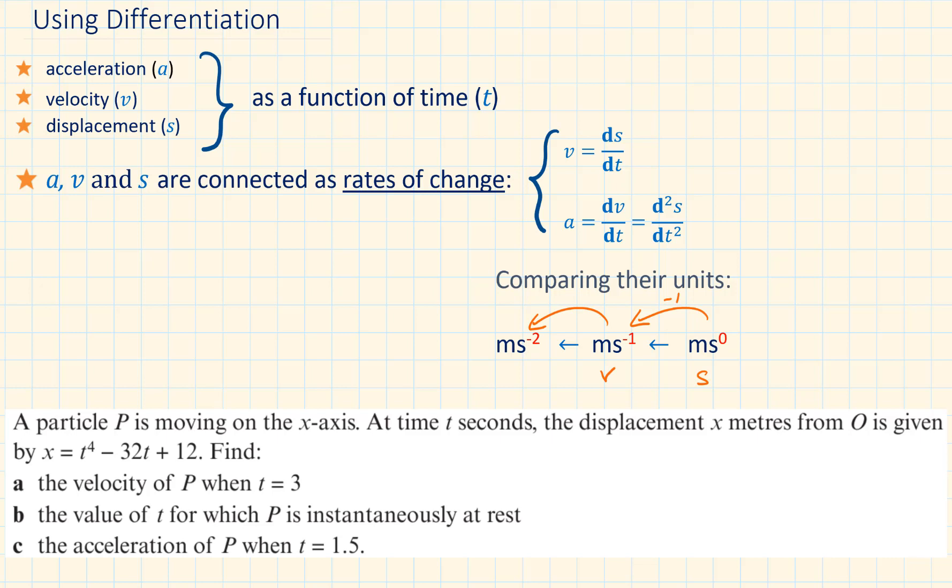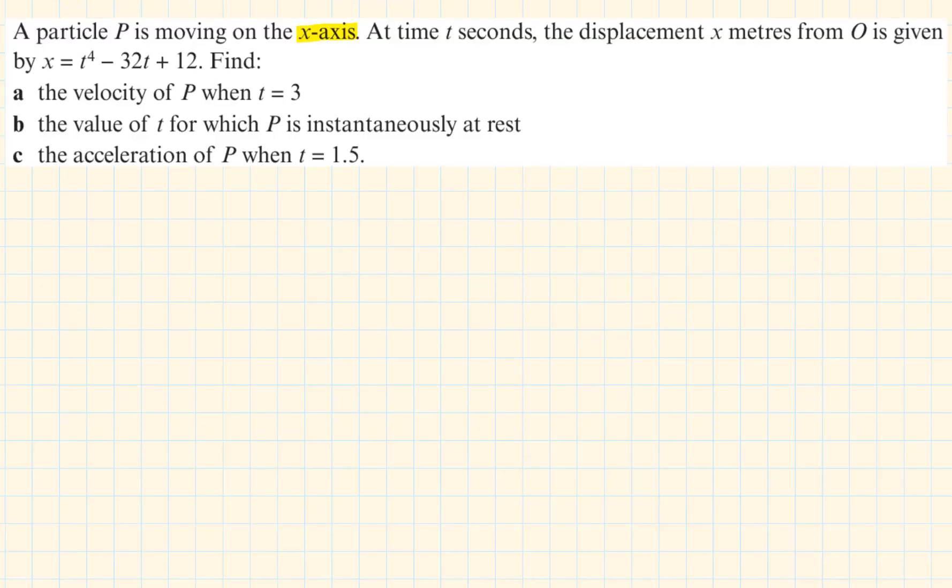Differentiating this, we subtract one from the power of s again, and this becomes meter per second squared, which is the unit of acceleration. A particle P is moving on the x-axis. At time t seconds, the displacement x meters from O is given by x equals t to the power of 4 minus 32t plus 12.